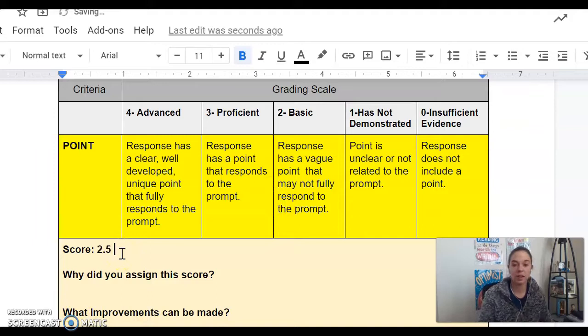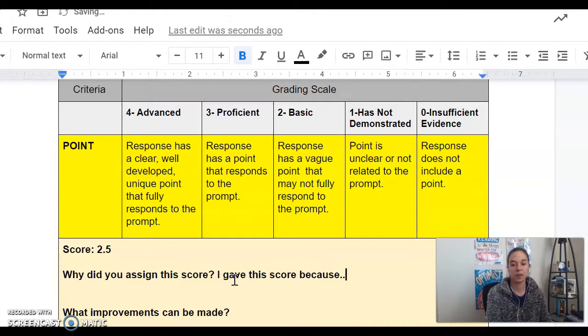Right here, I would put the score that I think it got. I'm going to say, I gave this score because... Explain why. And I'm going to give an improvement that this writer could make. The answer for this cannot be nothing, okay?